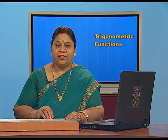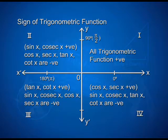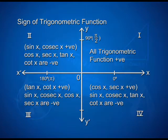The signs of trigonometric functions can be visualized in the plane as shown in the figure. In the first quadrant, all trigonometric functions are positive. In the second quadrant, sin x and cosec x are positive while cos x, sec x, tan x and cot x are negative. In the third quadrant, tan x and cot x are positive and sin x, cosec x, cos x and sec x are negative. In the fourth quadrant, cos x and sec x are positive whereas sin x, cosec x, tan x and cot x are negative. With the help of this figure it will be easy to remember the signs, which will help us solve problems regarding trigonometric functions.